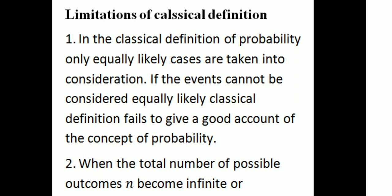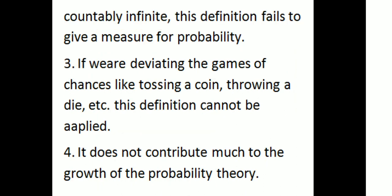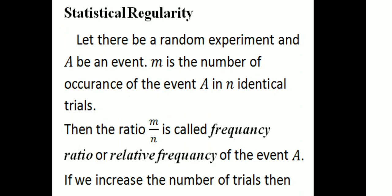Limitations of the classical definition: first, only equally likely cases are taken into consideration — if events cannot be considered equally likely, the classical definition fails. Second, when the total number of possible outcomes N becomes infinite or countably infinite, this definition fails to give a measure for probability. Third, if we are deviating from games of chance like tossing a coin or throwing a die, this definition cannot be applied, and it does not contribute much to the growth of probability theory.